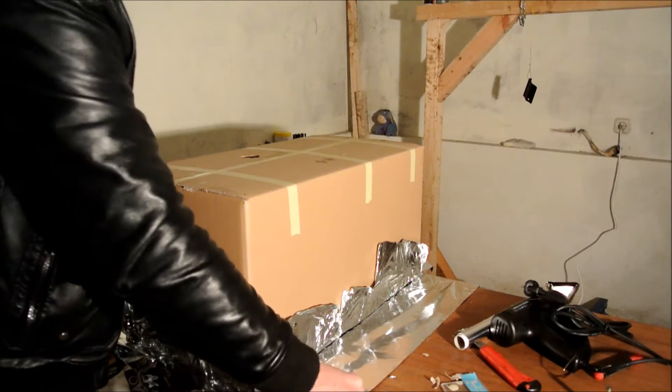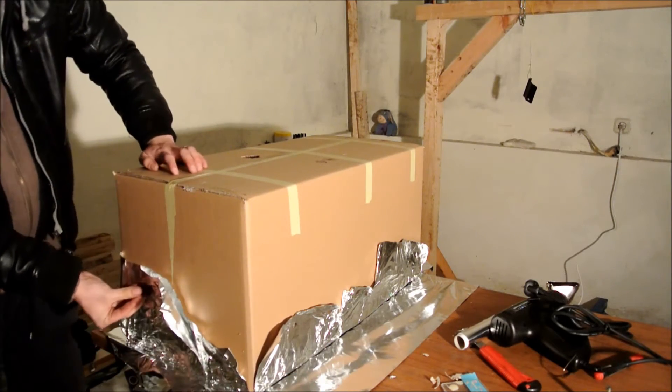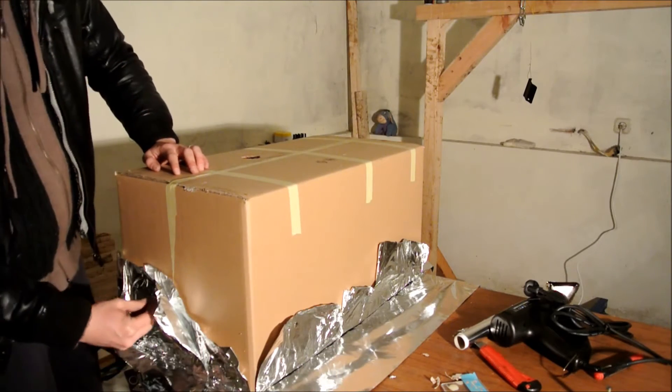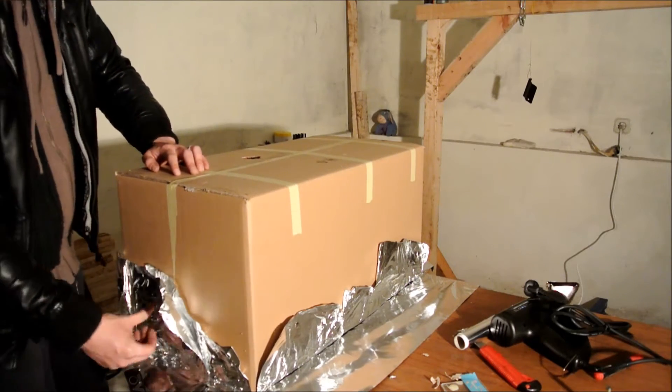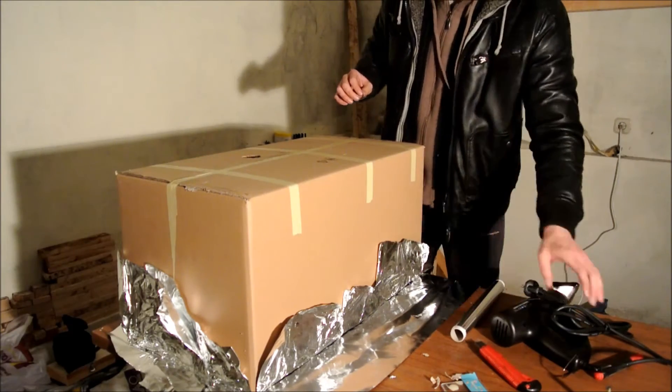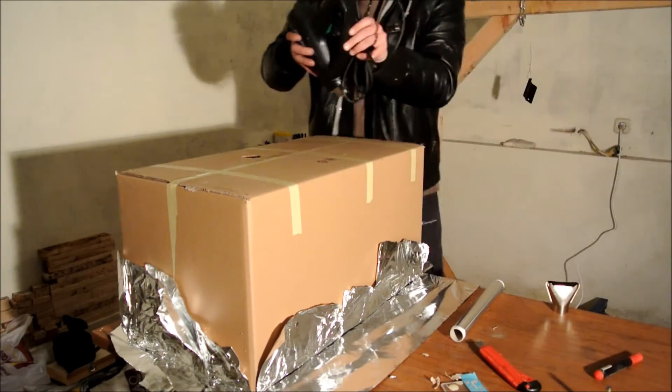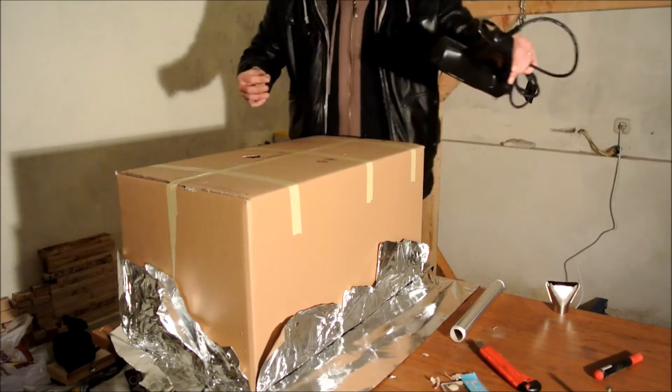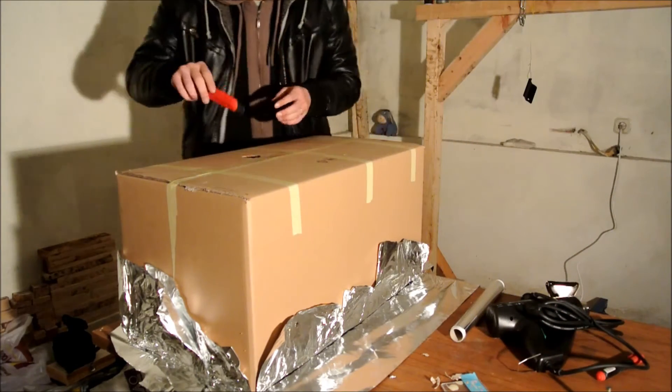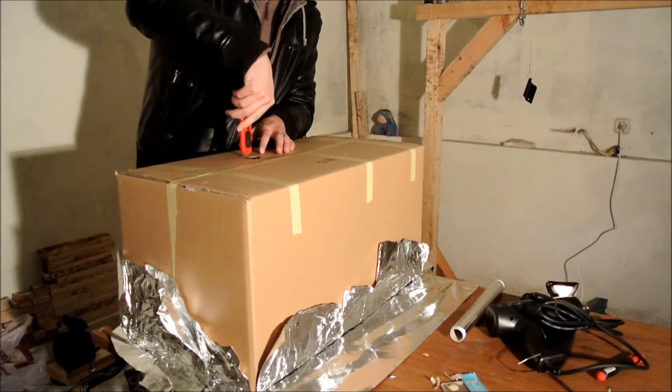Use the hole that you have made before for the heat gun and get the heat gun in. Before that, since aluminum foil is actually covered at the hole, you want to cut at the aluminum foil.